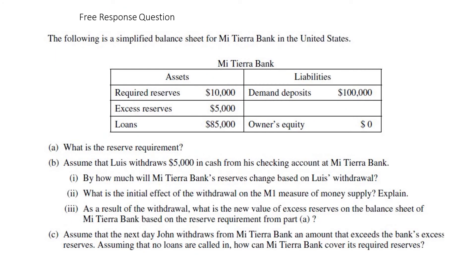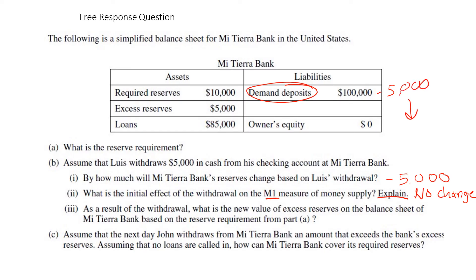We can answer these questions now. By how much will Meteora Bank's reserves change based on Luis's withdrawal? The reserves are going to go down by five thousand dollars. What is the initial effect of the withdrawal on the M1 measure of money supply? There's going to be no change. The reason is that cash and demand deposits are both part of the M1 supply of money. So if you take five thousand from a demand deposit — already part of M1 — and move it into cash — also part of M1 — you're just moving something from M1 to M1, so there's no change.